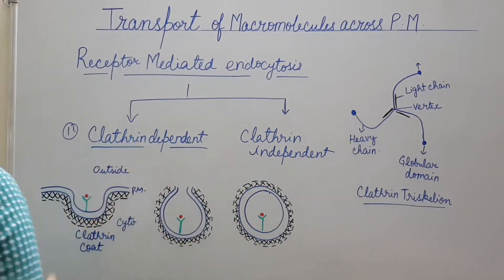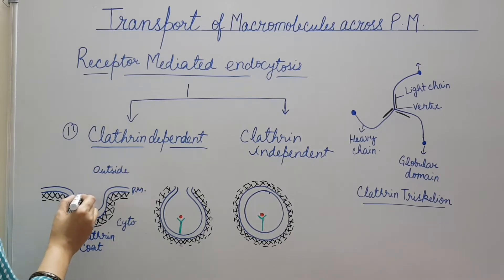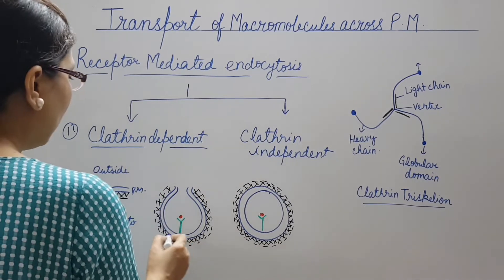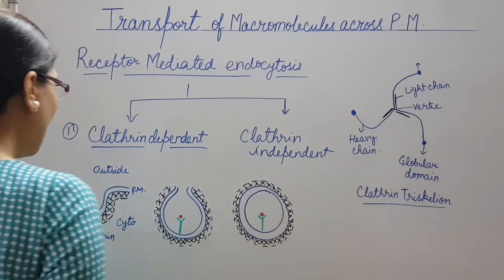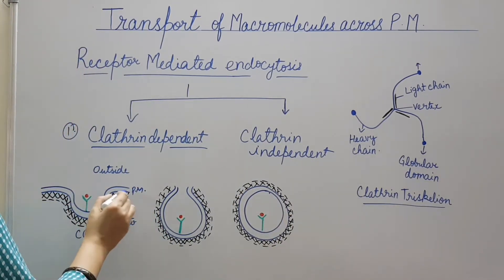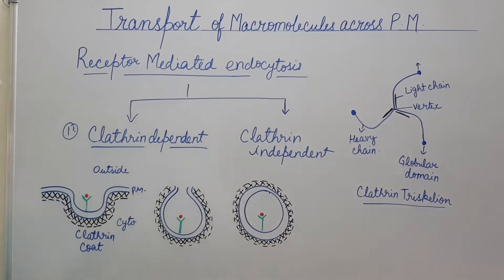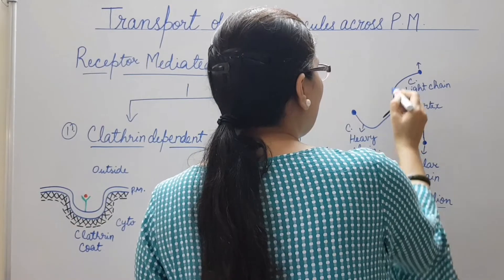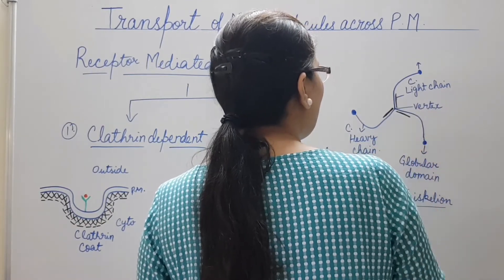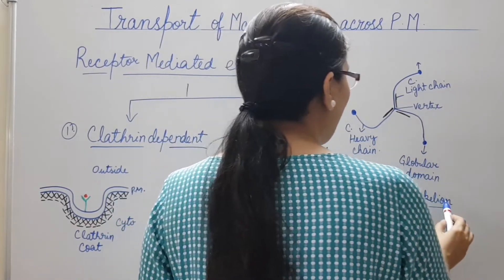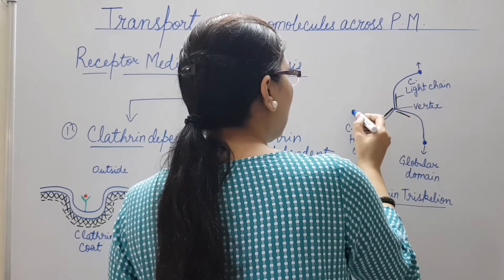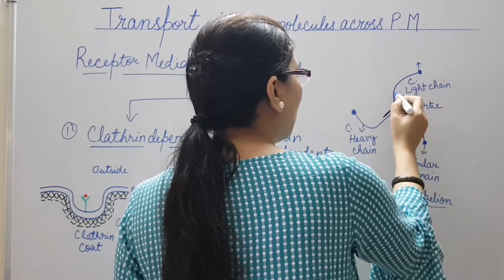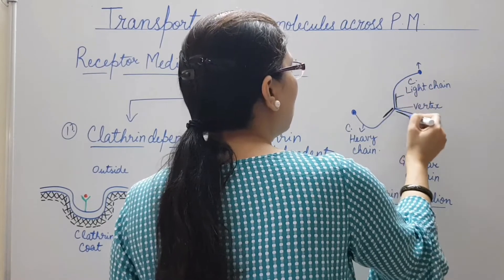In clathrin-dependent endocytosis, macromolecules bind to the receptor and this receptor-ligand complex accumulates in the clathrin-coated pit, then these are internalized by the cell in the clathrin-coated vesicle. Clathrin is assembled on the cytoplasmic side of the plasma membrane. It consists of three copies of the clathrin heavy chain and three copies of the clathrin light chain, arranged as a clathrin triskelion from a central vertex, with three heavy chains radiating outward and having terminal globular domains, with the light chain bound to the inner half of each heavy chain.